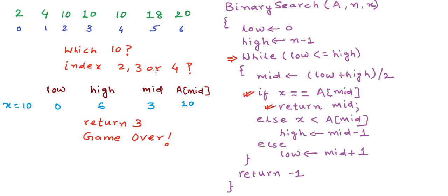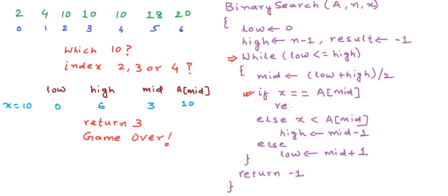We do not care that there is another 10 at index 2. But if we wanted to find out the first occurrence of 10, we should not have stopped here. We should say: I found one 10 at index 3 — let me look to the left to see if there is another 10 at a lower index, and return that one instead. So I will modify this algorithm slightly. We take a variable result initialized to -1. When x equals the middle element, instead of returning immediately, we modify result to mid and adjust high to mid minus 1.